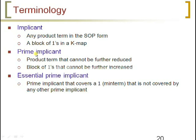A prime implicant is a product term that cannot be further reduced — a maximum-sized implicant. Blocks of 1s that cannot be further increased are prime implicants. An essential prime implicant is a prime implicant that covers a 1 (min term) that is not covered by any other prime implicant. If there is any prime implicant not covered by other prime implicants, that PI is called an essential prime implicant.